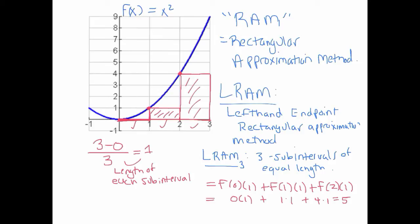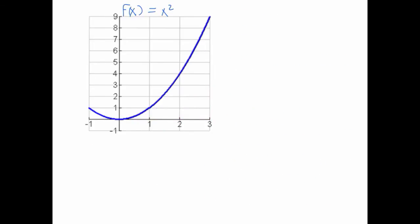In this case, LRAM definitely underestimates — all that space shown in purple is not being counted. This is a pretty crude approximation. One obvious way to improve it is to break up the interval into more subintervals, which gives more rectangles that start to cover the missed space.